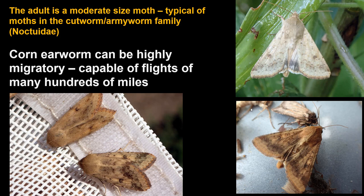The adult corn earworm is kind of buff-colored, brown, and not particularly distinctive. It is typical of moths in the cutworm and armyworm family — similar in size to the army cutworm or miller moth. It is also an extremely migratory insect, capable of flights of many hundreds of miles, so this is something that can disperse into a new area every year in a different manner.